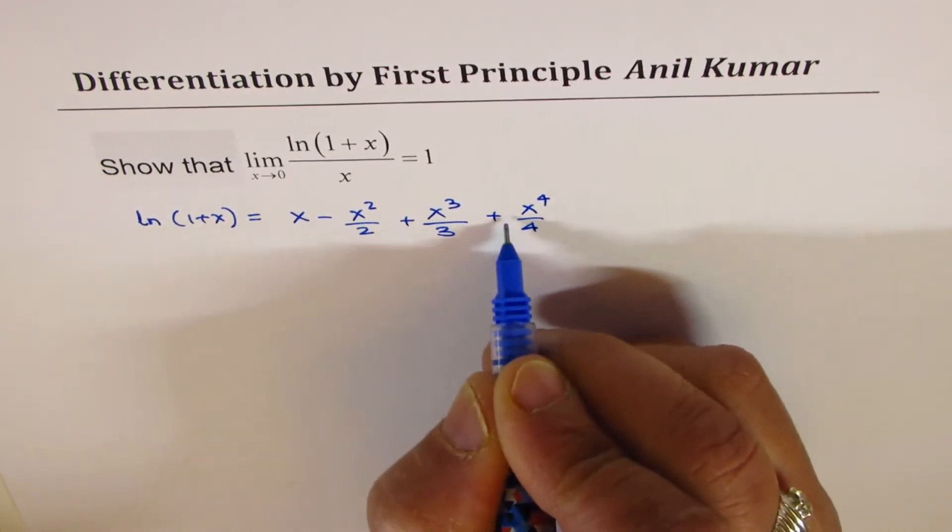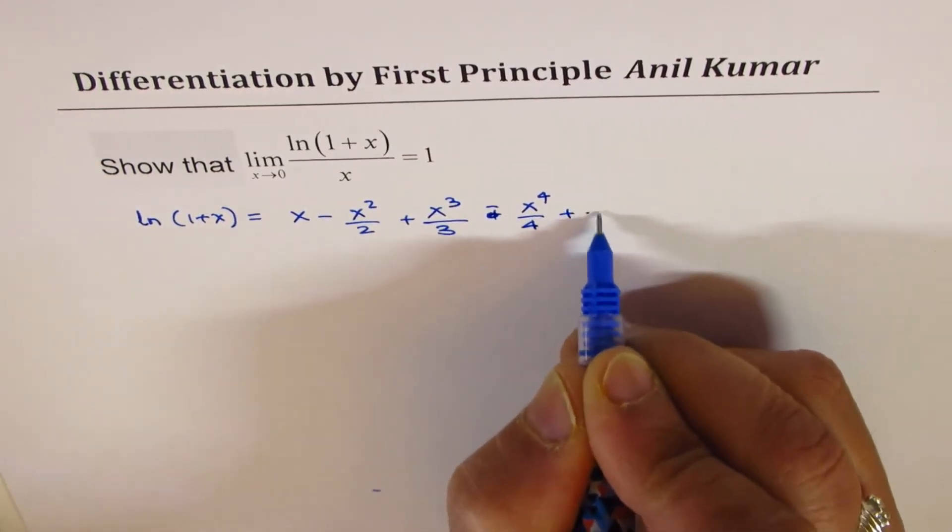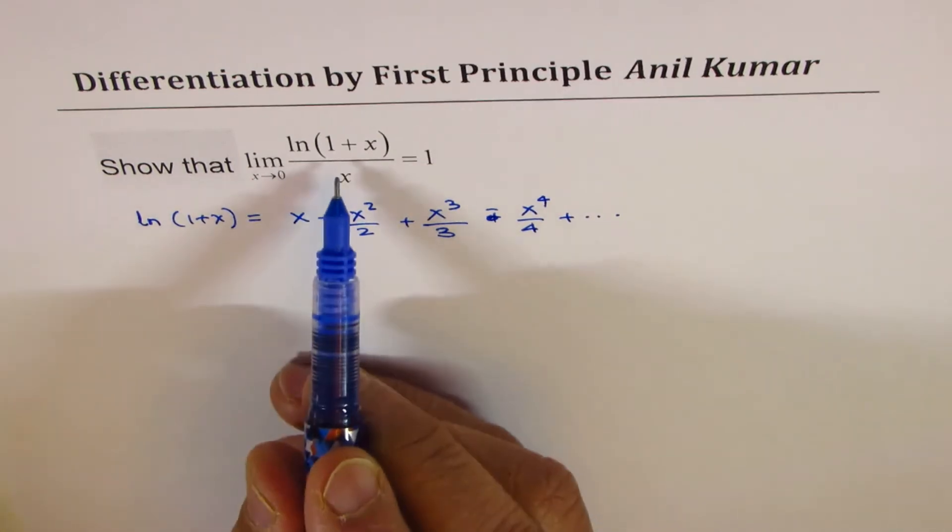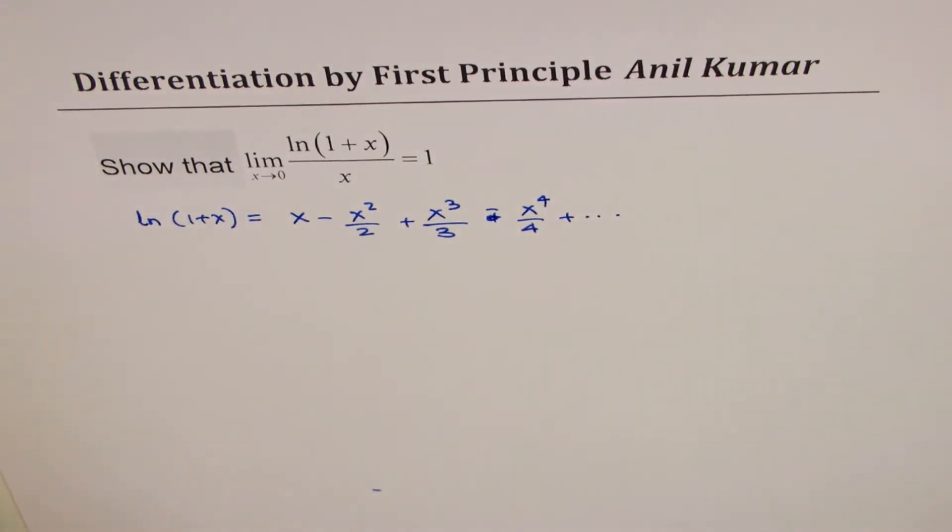This is minus then plus, alternating minus and plus, and so on. Now we will use this formula to prove the limit. That is the whole idea.